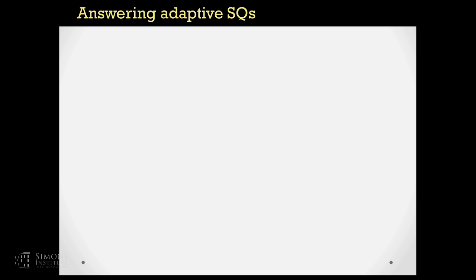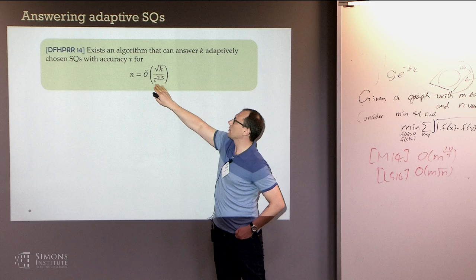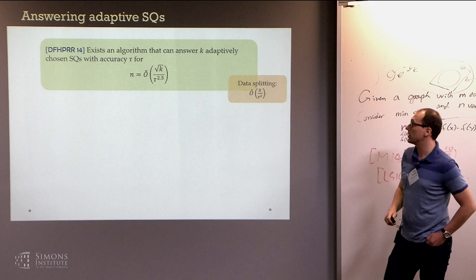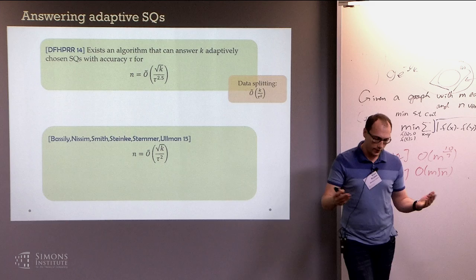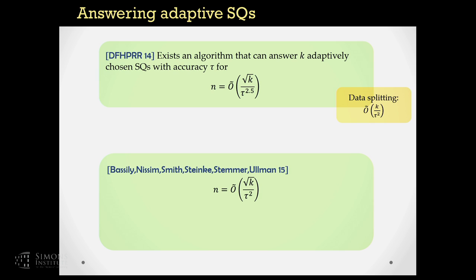That's the main result of the earlier work, which shows there exists an algorithm that can answer K adaptively chosen statistical queries with accuracy tau, given a number of samples that grows as the square root of K with dependence tau^{2.5} — a quadratic improvement in dependence on K compared to data splitting, though with slightly worse dependence on accuracy. Subsequently, Bassily, Nissim, Smith, Steinke, Stemmer, and Ullman found a more clever analysis of the same algorithm showing it achieves the correct tau² dependence on accuracy.